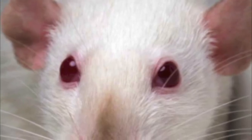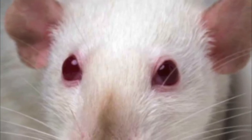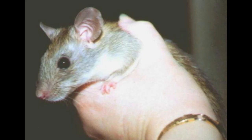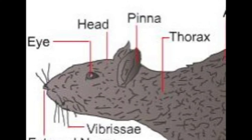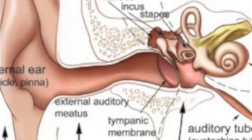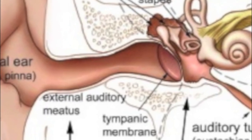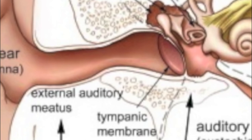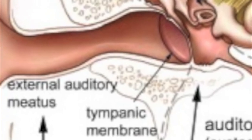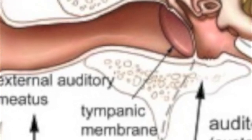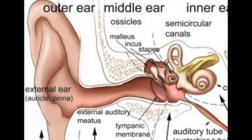Rats also have upper and lower eyelids. When it comes to their ears, rats have a unique feature: they have an external fold called a pinna, which directs sound waves into their ear canals. A tympanic membrane lies out of sight at the base of this ear canal. Another name for the ear canal is the external auditory meatus.